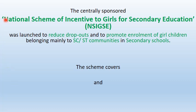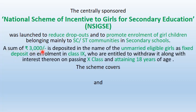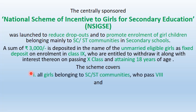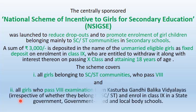The centrally sponsored National Scheme of Incentive to Girls for Secondary Education (NSIGSE) was launched to reduce dropouts and promote enrollment of girl children belonging mainly to SC and ST communities in secondary schools. A sum of Rs. 3,000 is deposited in the name of the unmarried eligible girl as a fixed deposit on enrollment in class 9, and they are entitled to withdraw it along with interest on passing class 10 and attaining 18 years of age.